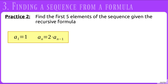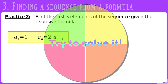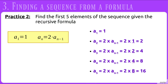Let's do another. With a sub 1 equals 1 and a sub n equals 2 times the previous term, find the first 5 elements of the sequence. You should have ended up with 1, 2, 4, 8, and 16.